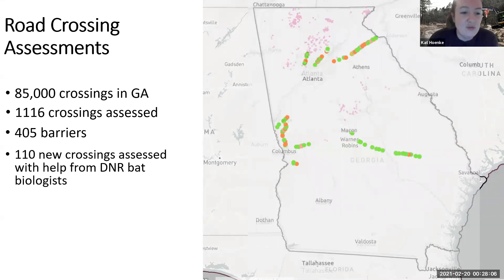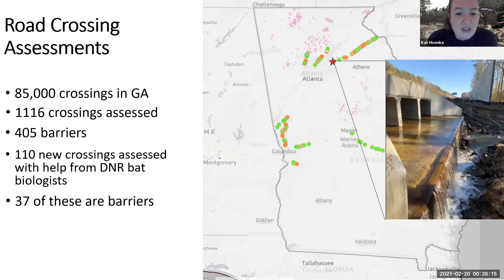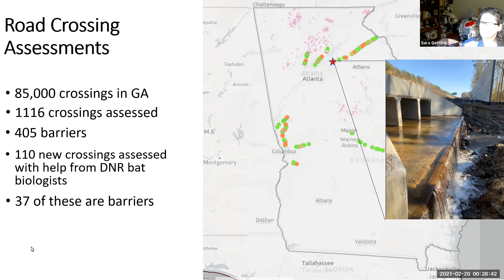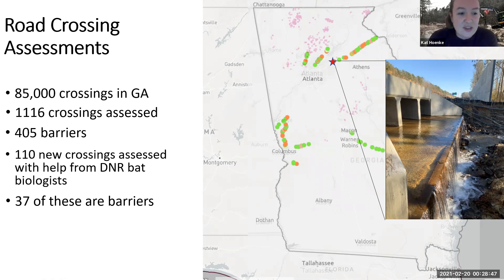Another amazing partnership developed through the Aquatic Connectivity Team involves working with Department of Natural Resources bat biologists, who are also collecting field information to determine where bats are roosting. We've been working with them to collect additional information that helps us determine which structures are barriers. The color dots on the map represent 110 additional barriers visited with these bat biologists — 37 of the 110 are confirmed barriers. This presents a wonderful opportunity to partner with DNR and the Department of Transportation to understand how many barriers exist across the landscape.